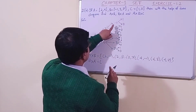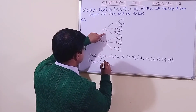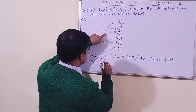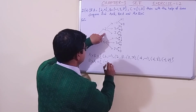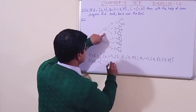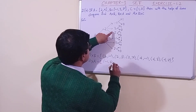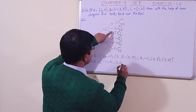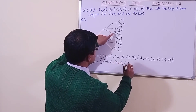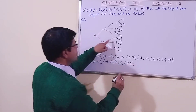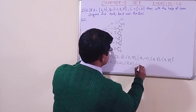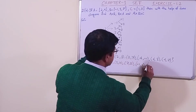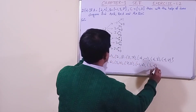For B cross A, -1 is made pair with 2, giving (-1, 2), then with 4 giving (-1, 4). Then 3 is paired with 2 and 4, giving (3, 2) and (3, 4). Then 7 is paired with 2 and 4.